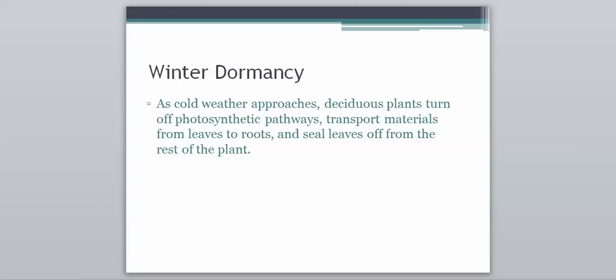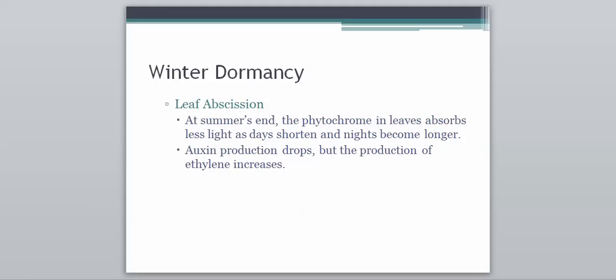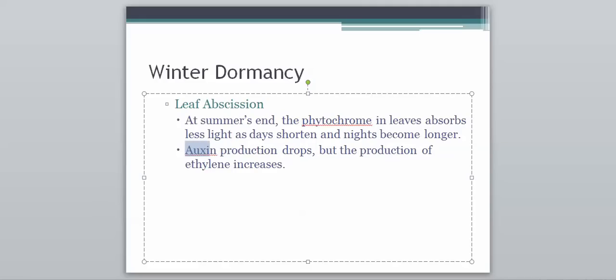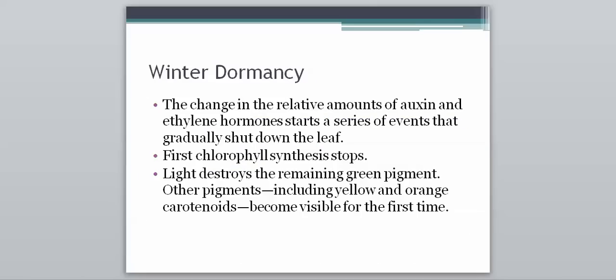Essentially, the plant is saying leaves are not going to serve much of a function during winter, so it gets all nutrients away from them, puts them down in the roots, and seals the leaves off. As a result, something called leaf abscission occurs. At summer's end, the phytochrome in leaves absorbs less light as days shorten and nights become longer. Auxin production drops, but the production of ethylene increases. These changes in auxin and ethylene start a series of events that gradually shut down the leaves.